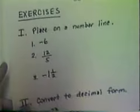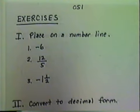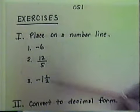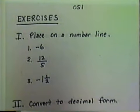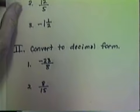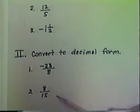Now I have some exercises for you to do. Copy the problems down, stop the tape, work the problems, and then turn the tape back on to check your answers. We've got two groups of problems. First is to place on a number line: negative six, twelve-fifths, and negative one and one-half. The next group of problems is to convert to decimal form: negative twenty-three-eighths and eight-fifteenths.